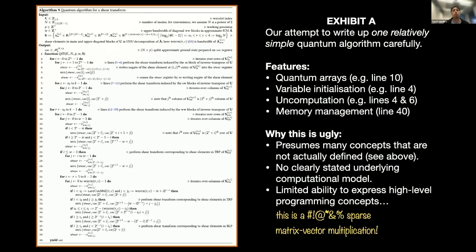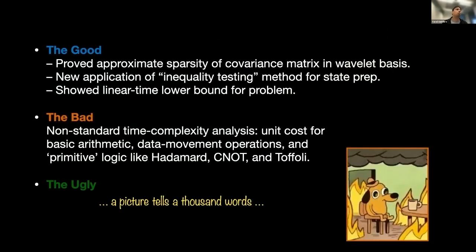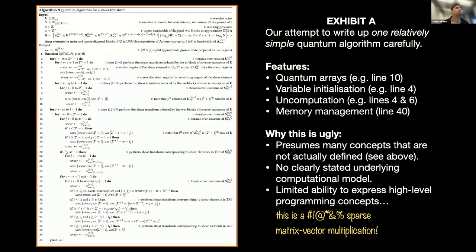Now here's where the ugly comes in. What you're looking at is a particular page in our ground state generation paper — the quantum field theory paper. If we look at the bottom right, there's something called QST: quantum shear transform. We need to come up with a way to execute this quantum shear transform, and that's what this pseudocode explains. The inputs are that bubble of classical data; the output is a quantum register in which the vacuum state is being prepared.